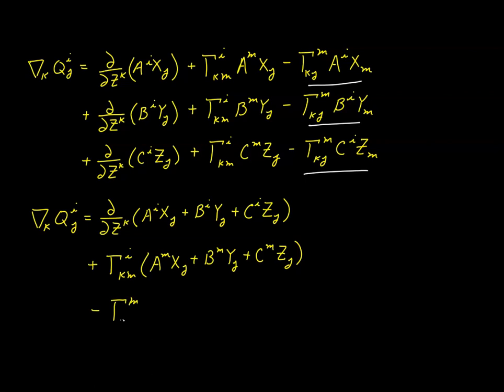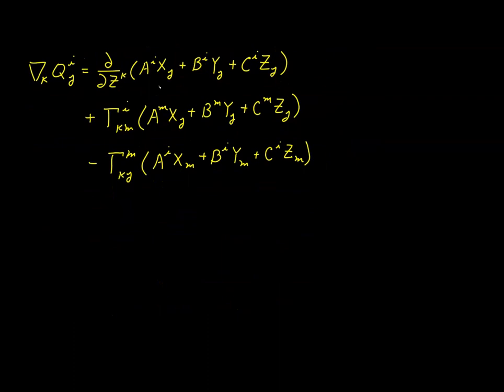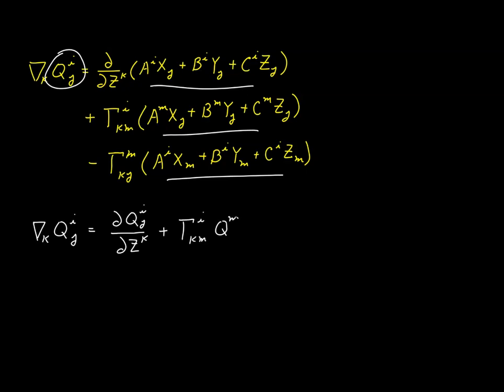Finally, we replace each of these expressions with their equivalents in the form of our second-rank tensor. And this is the expression we've been looking for, the covariant derivative of a second-rank tensor.